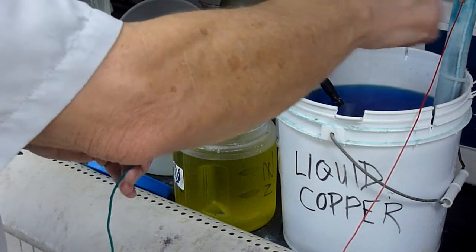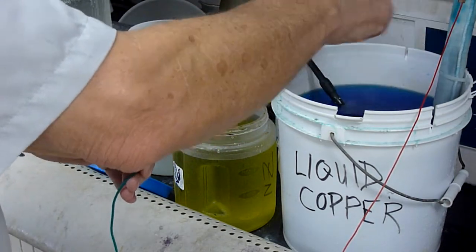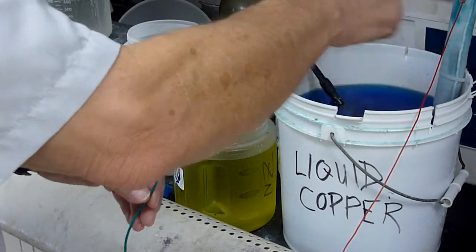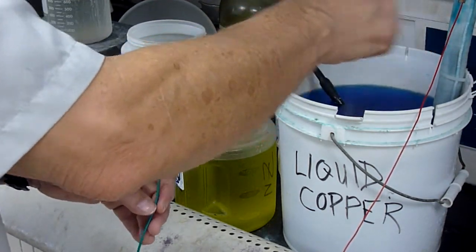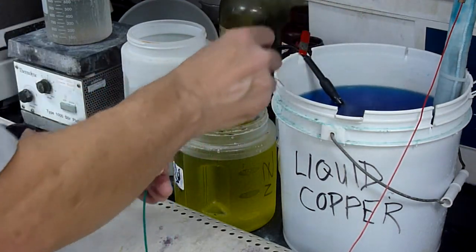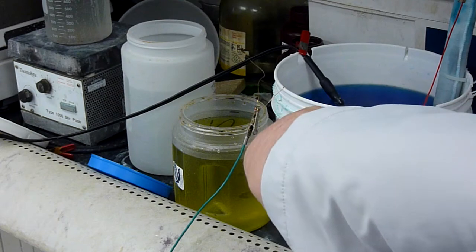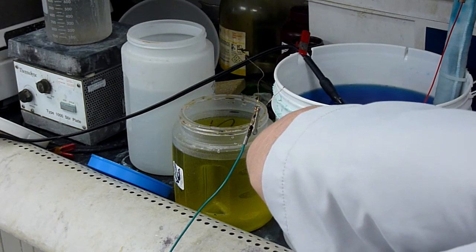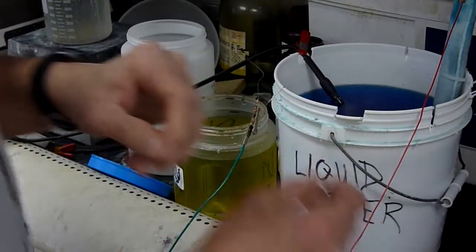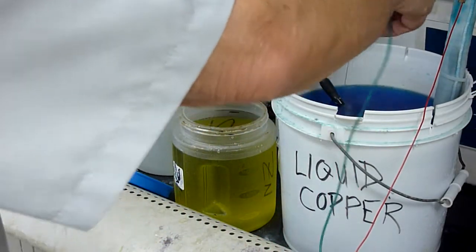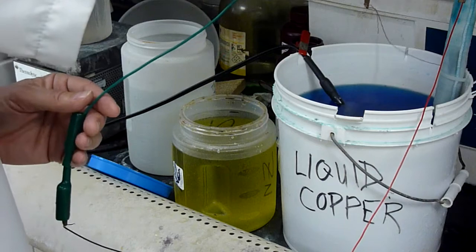If you do the math, 200 milliamps into three square inches, I think you will see is about 10 amps per square foot, which is a bit on the high side, honestly. I'm going to back my current down. I'm at 0.14 amps, 140 milliamps right now. And we'll see what kind of a result we get here.